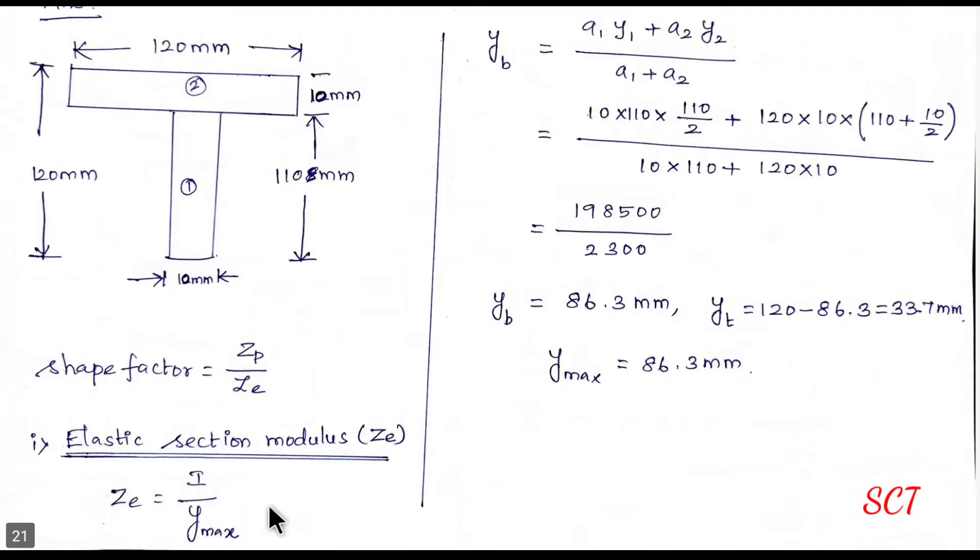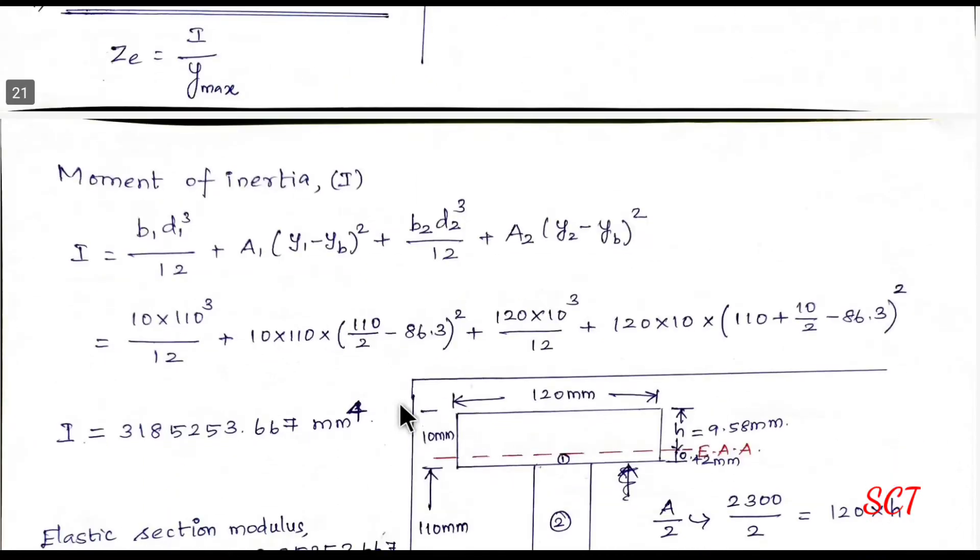Why do you think that ZE is equal to I by Y maximum? So that's why. Now we can do I. If we look at the formula, we can do two sections. T sections, two sections. So b1, d1 cube divided by 12 plus a1, y1 minus yb bar square. This is a rectangular formula. Next, b2, d2 cube divided by 12 plus a2, y2 minus yb whole square formula.